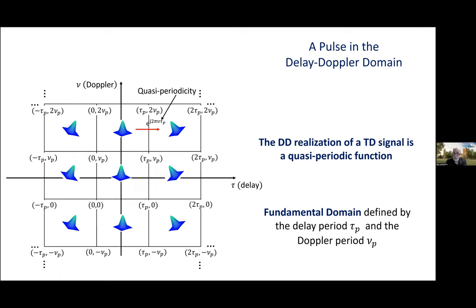What does that mean? It means that the delay-Doppler domain pulse is in fact a configuration of infinitely many pulses which repeat at multiples of the delay period tau_p along the delay axis and at integer multiples of nu_p along the Doppler axis. We take the product of tau_p and nu_p to be one.